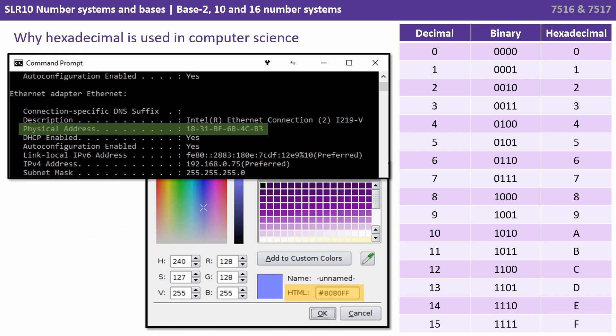So why is hexadecimal used in computer science? Well, it's used as it's a very convenient shorthand version of representing much longer binary numbers.